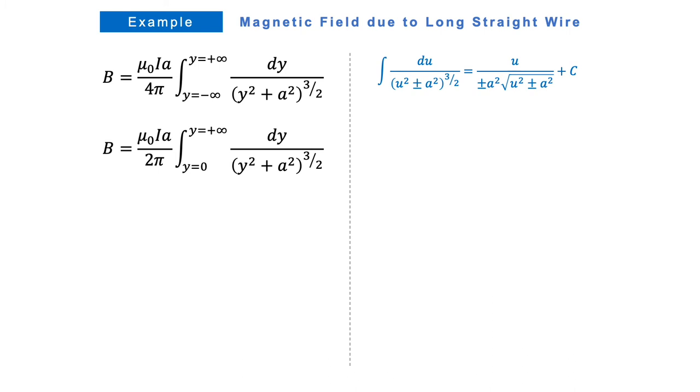So this integral here is in the form of integral of 1 over quantity u squared plus a squared raised to 3 halves. And it is actually equal to u over a squared times square root of u squared plus a squared plus a constant. So this tells us that the integral of 1 over quantity y squared plus a squared raised to 3 halves is equal to y over a squared square root of y squared plus a squared.